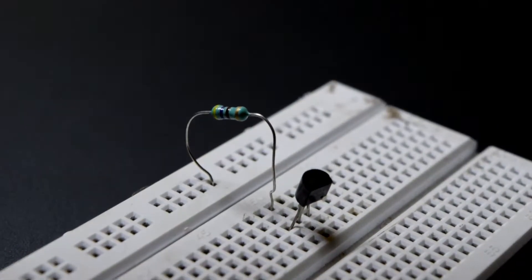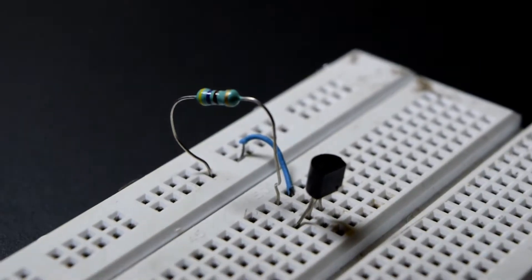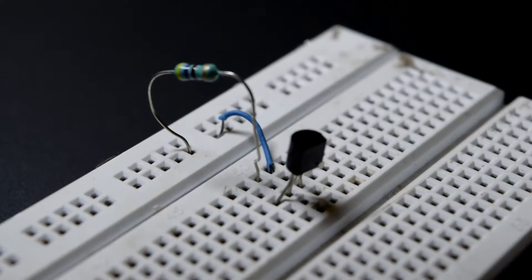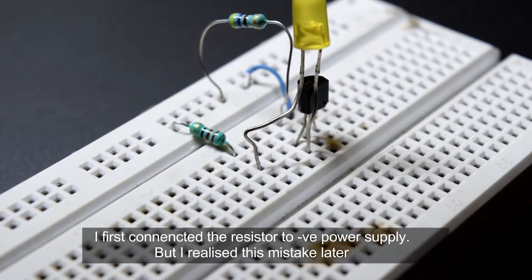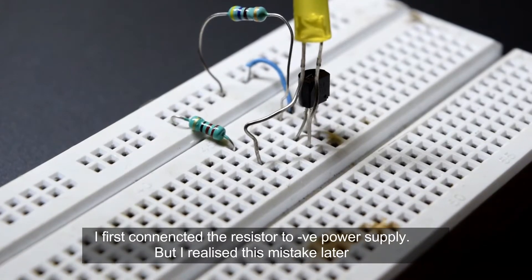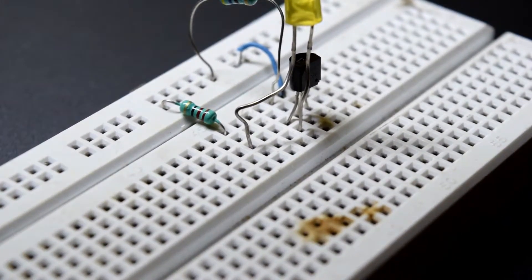Now connect the emitter of the transistor to ground. The next step is to connect the negative terminal of the LED to the collector of the transistor, and the positive terminal of the LED to the positive power supply using a 220 ohm resistor.